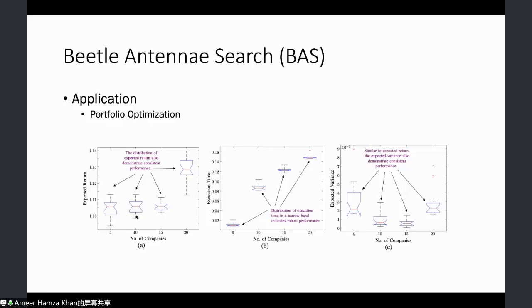Since this is a stochastic algorithm, there is some degree of randomness — running the experiment repeatedly may yield different results. We ran each experiment 25 times and plotted the distribution. Even with randomness, the results are constrained in a very narrow range, showing that the proposed algorithm provides very consistent performance.